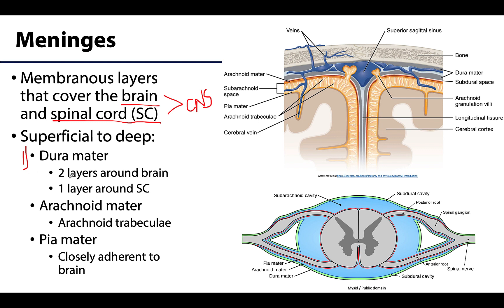There are two layers associated with the brain of the dura mater, and that's where this big difference comes between the two, as there's only one layer of dura mater associated with the spinal cord. More to come on these two layers in some upcoming slides. And you can see here the two layers of the dura mater associated with the brain.